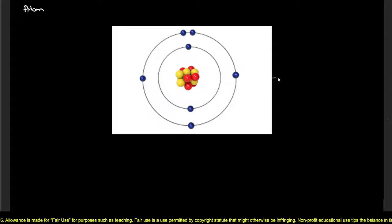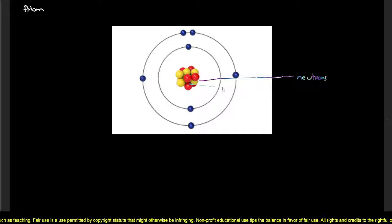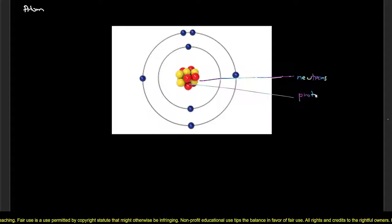Neutrons and protons are found at the center of the atom, and electrons are found around the neutrons and protons.